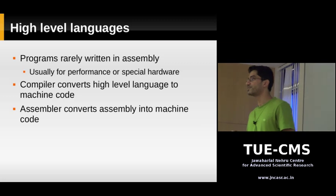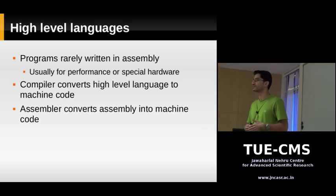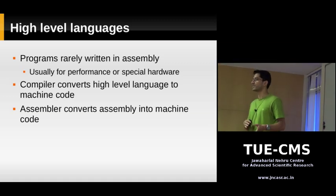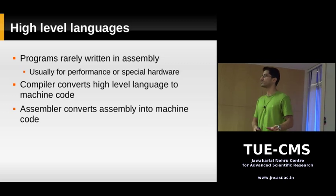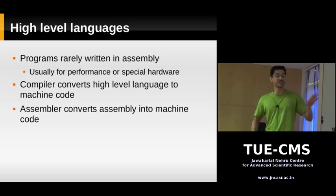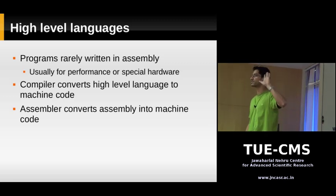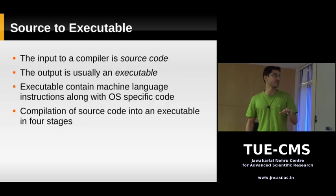The assembler is a program that converts assembly code to machine code. And the compiler is what converts your high-level language into machine code. So before you run your program — written in a high-level language or assembly language — you need to convert it into machine language first. That's the compilation process we're going to talk about today: the whole process of converting your source code, written in C or Fortran, into machine code which is ready to be executed by your computer.